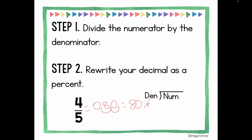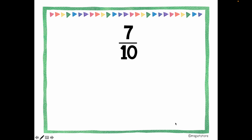Also remember: if you're doing long division without a calculator, the numerator goes inside the division box. In this case, 4 goes inside and 5 goes outside. Pause the video and try this one yourself. For 7/10: seven divided by ten equals 0.7. But that can't be my final answer — I need it as a percent. So I move the decimal point one and two spaces to the right, placing my invisible zero, which means this equals 70 percent.